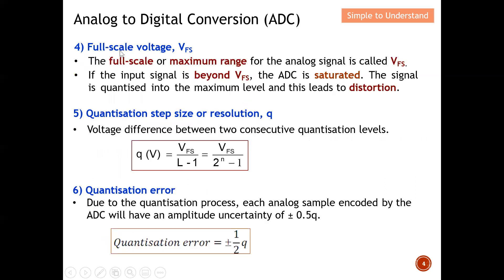Next, we talk about full scale voltage. The full scale or maximum range for the analog signal is called VFS. This voltage full scale describes the analog signal from the very minimum all the way to the maximum. I will use a diagram to describe voltage full swing. If the input signal is beyond the voltage full swing, the ADC is saturated — the signal is quantized into the maximum level and this leads to distortion. If the analog signal is much bigger than the voltage full swing, the ADC will not be capable of representing the signal in digital format anymore, leading to distortion.